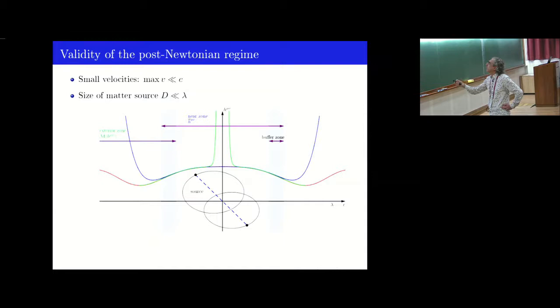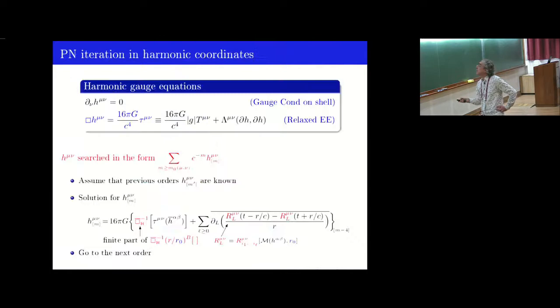The post-Newtonian approximation departs from the real metric solution when you are too far from the near zone. Conversely, the post-Minkowskian in green solution, the multipolar post-Minkowskian solution, actually diverges at the origin but it becomes very accurate in the exterior zone.